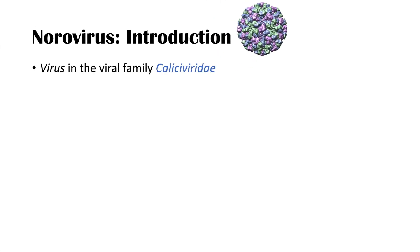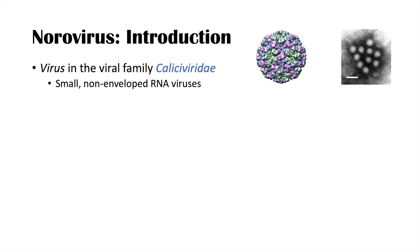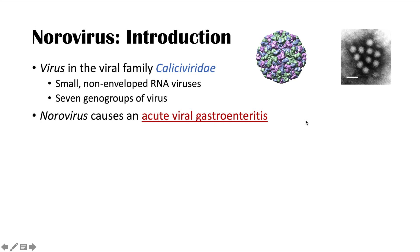The norovirus is a virus in the viral family Caliciviridae. These are small non-enveloped RNA viruses, and there are actually seven genogroups of the norovirus, but all of them have the same symptoms. The norovirus causes an acute viral gastroenteritis — it's acute, it's viral, and it's a gastroenteritis, meaning inflammation of the gastrointestinal system. In fact, the norovirus is the most common viral cause of gastroenteritis worldwide.